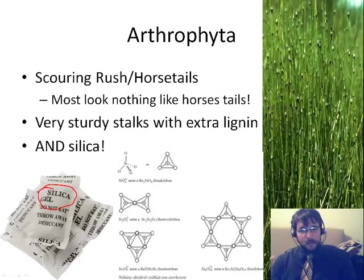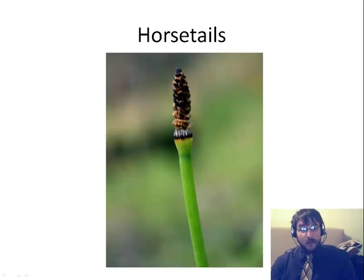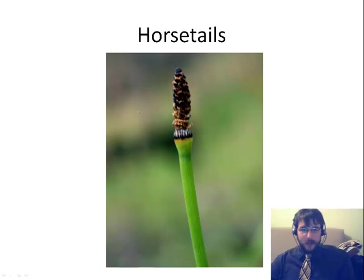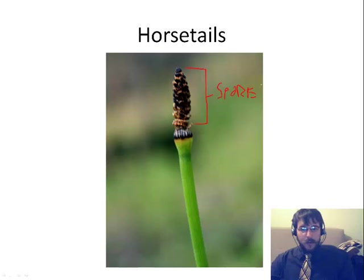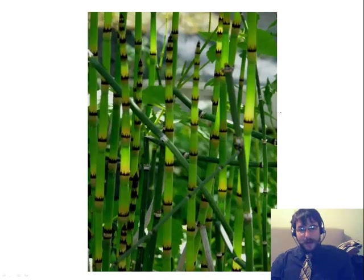When you get to feel it and see it with a microscope, it's gritty. It's called scouring rush because people used to use them to scour pots with. Here's a picture of them. They have this really nice sporangia up at the top — this is where the spores get made. The spores get made here and, just like before, they're dispersed by the wind. You can see some nice joints, which is why their phylum is called the joint plants.